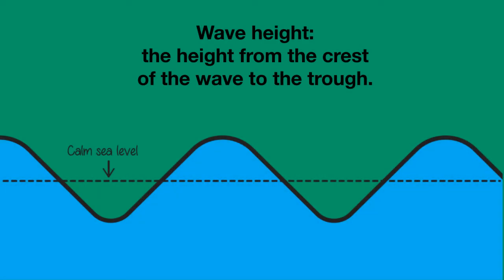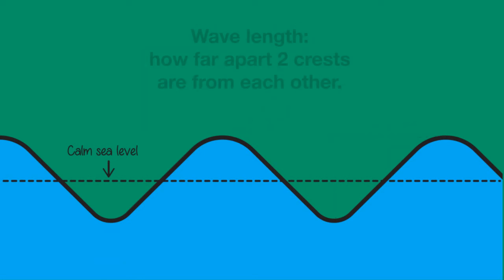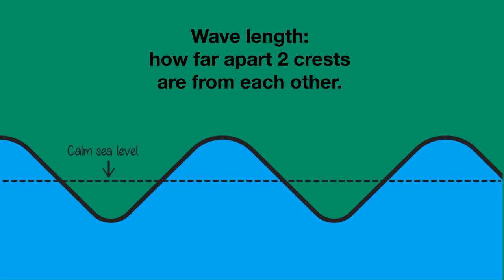Waves can be high or low — we call this the wave height: the height from the crest, the top of the wave, to the trough, the bottom of the wave. Waves can also be long or short — we call this the wave length: how far apart two crests are from each other.